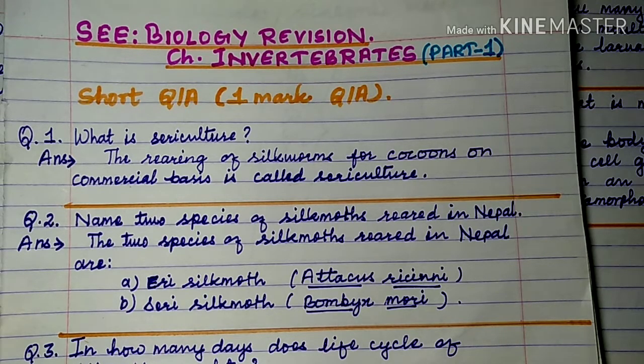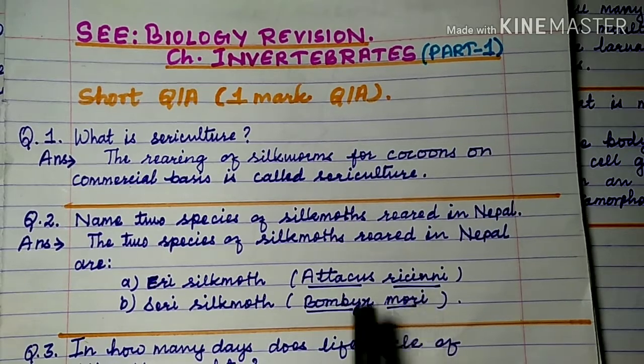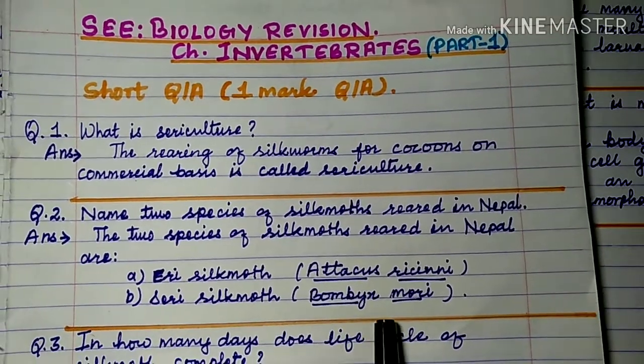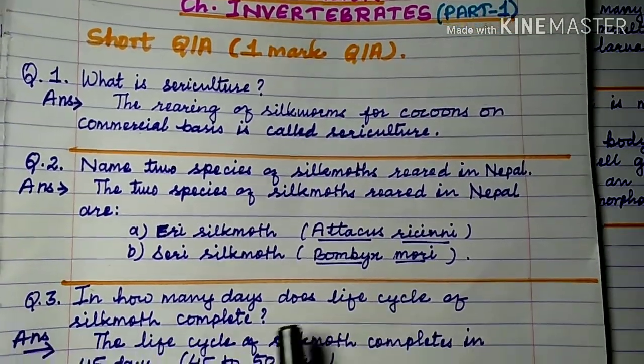Sometimes scientific names are also asked, so you need to remember: Eri silk moth — Attacus ricini; Seric silk moth — Bombyx mori.